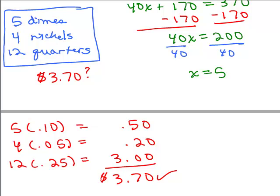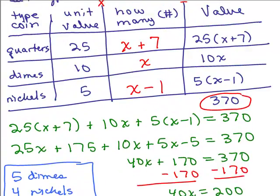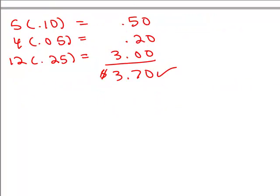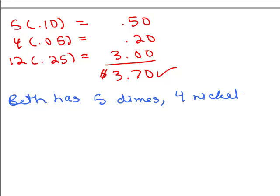So the answer is she has 5 dimes, 4 nickels, and 12 quarters. And you could write that in a sentence as well. Beth has 5 dimes, 4 nickels, and 12 quarters.